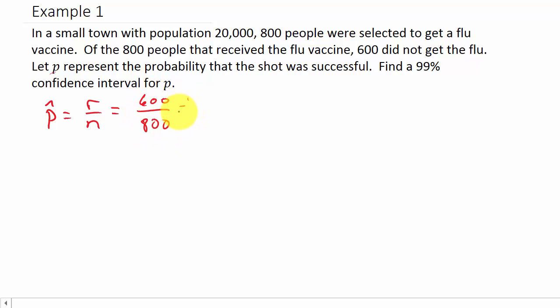So this is going to be 0.75. Then we know that Q hat is 1 minus P hat, which is 1 minus 0.75, which equals 0.25. And we also know that N equals 800.